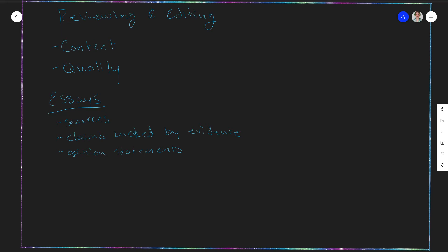When we talk about quality — we'll leave content in blue and quality in pink — quality includes things such as your grammar, your structure, and your style. It also includes things like tone, your general depth and focus, and how direct you are. These are the important things you're generally going to be looking at when reviewing. You want to make sure you're covering these things when helping each other improve your writing and reviewing your own work.